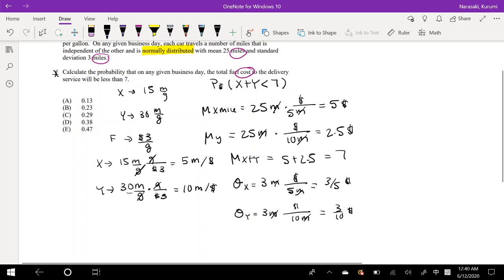And remember for standard deviation, what we have to do is that we have to square it to bring it back up. So our standard deviation of x plus y is equal to the square root of this squared plus this squared. So that's going to be 3 over 5 squared plus 3 over 10 squared.